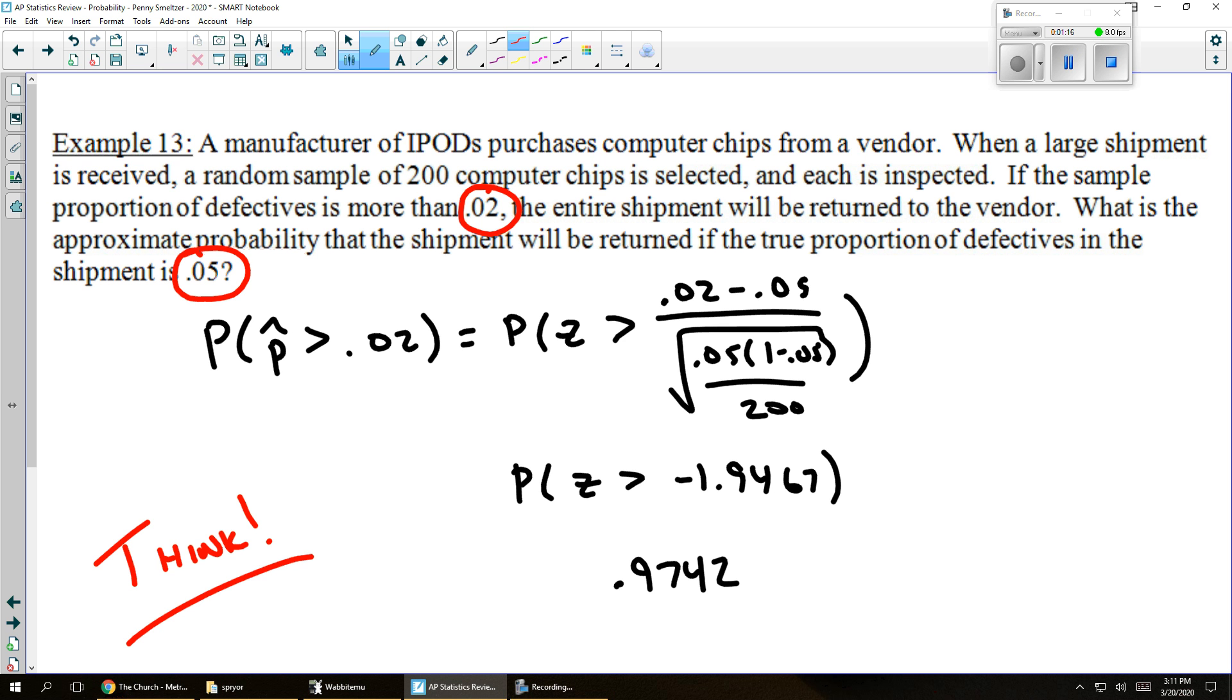It's almost certain that I'll realize that it's more than 2% and send it back. Now, what's actually interesting is that means there's a 2.5% chance that even when it's this far out of whack, I'll still get a p-hat less than that and fail to recognize that I had a bad shipment.